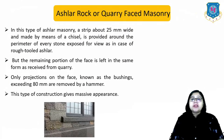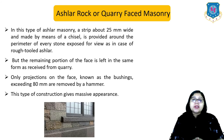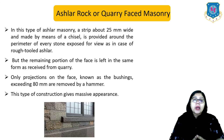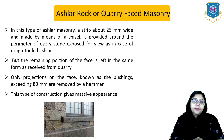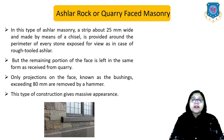The next type is ashlar rock or quarry-faced masonry. A strip about 25 mm wide made by chisel is provided around the perimeter of every stone exposed for view, as in rough tooled ashlar. But the remaining portion of the face is left in the same form as received from the quarry. Only projections on the face, known as bushings, exceeding 80 mm are removed by a hammer. This type gives a massive appearance.